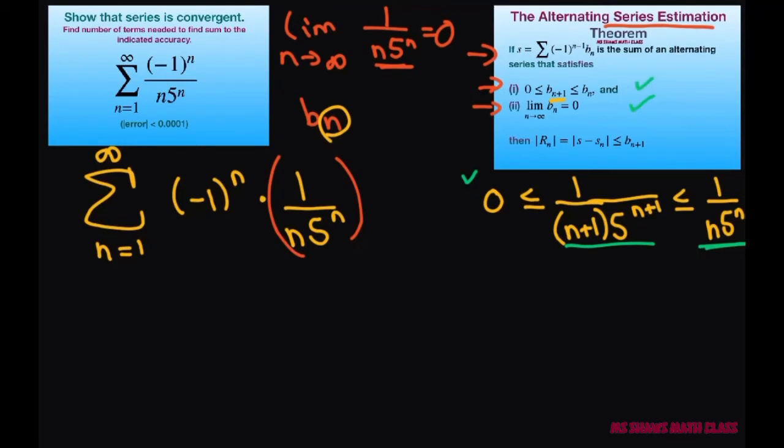So now let's look at this estimation part. Let's let b sub 4, let's see what happens with that. So if you substitute 4, you're going to get 1 divided by 4 times 5 to the power of 4. And that's going to equal 0.0004. That is larger than 0.0001.